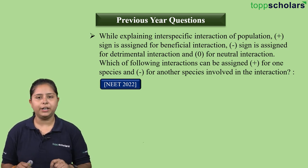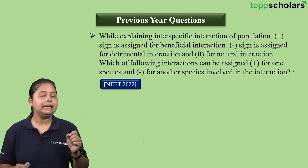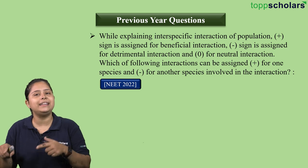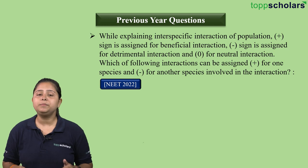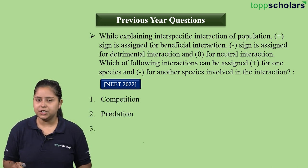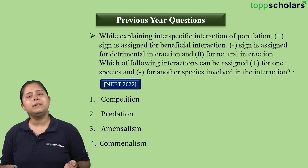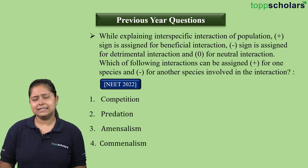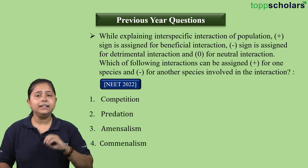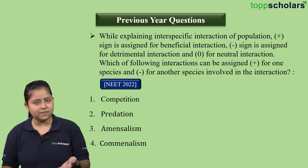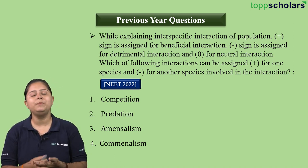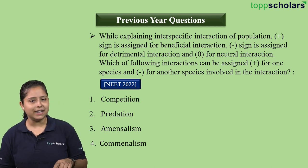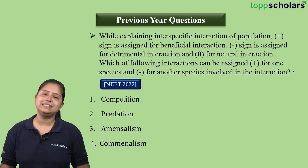This NEET 2022 question has options: competition (minus minus), predation (plus minus), amensalism (minus zero), and commensalism (plus zero). The question asks which interaction is assigned plus and minus signs. From our table: predation and parasitism both have plus and minus. Predation is given as an option — so predation is the answer. A rat eating grass: rat gets plus (predator, benefited), grass gets minus (prey, harmed). Option B — predation — is correct.